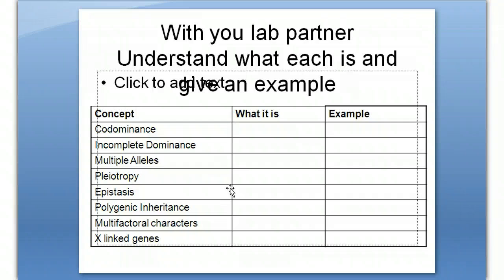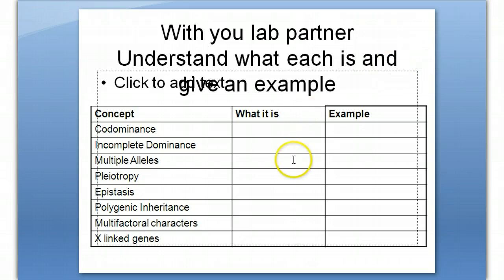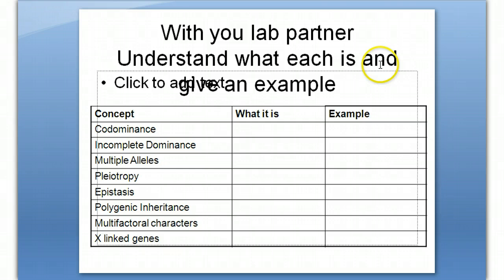At this time, I'd like you to copy down this table. You're going to figure out what it is for each one of these concepts and an example of it. You should be able to figure out a cross using some of these concepts, like x-linked genes, and we'll talk more about that as we get to it. Pause and copy this down on a fresh sheet of paper, leaving plenty of space to write some notes.